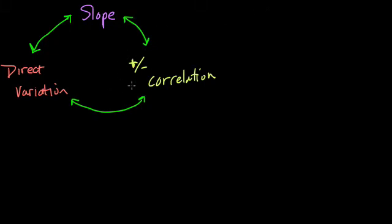We're looking at three things in this video and talking about how they're related: direct variation, slope, and positive or negative correlations.